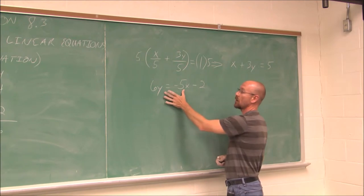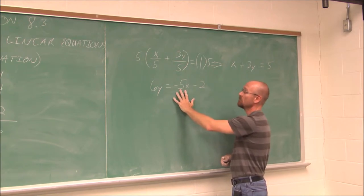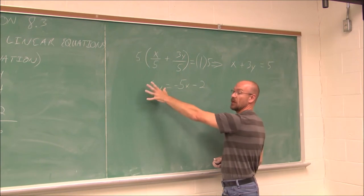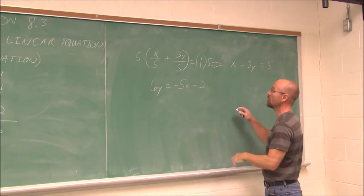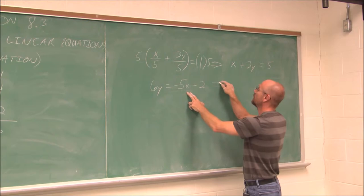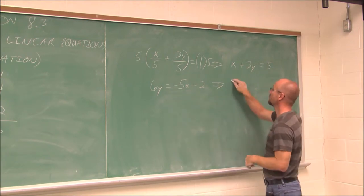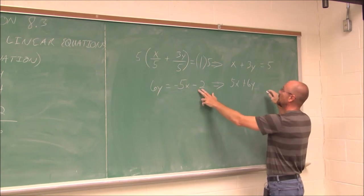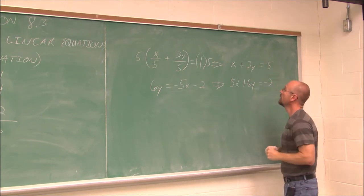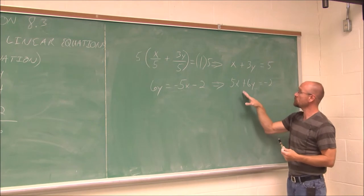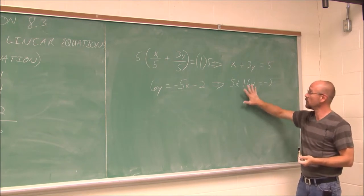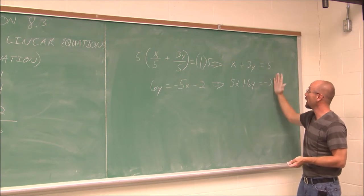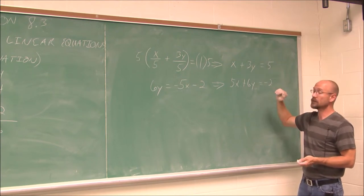Now this one here, I want to put into general form. So I'm going to add 5x to both sides. Bring my x's and y's to one side so it's in general form. So if I add 5x to both sides, I'd be left with 5x plus 6y equals negative 2 on this side. Now, once they're in the same format, my x's align, my y's align, my numbers align. Now I can say, all right, let's eliminate a variable. Which one will be the easiest to eliminate?